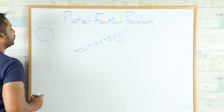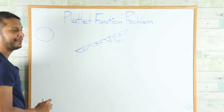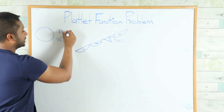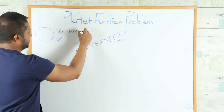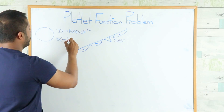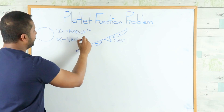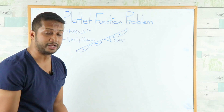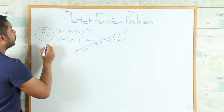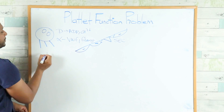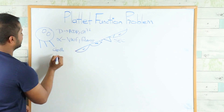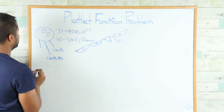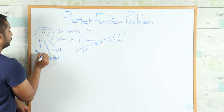Once subendothelial collagen is exposed, we need platelets. Platelets have two types of granules: dense granules, which contain ADP and calcium, and alpha granules, which contain von Willebrand factor and fibrinogen. These granules need to degranulate for platelet function. Platelets also have three important receptors: GP1b, GP2b3a, and the ADP receptor.